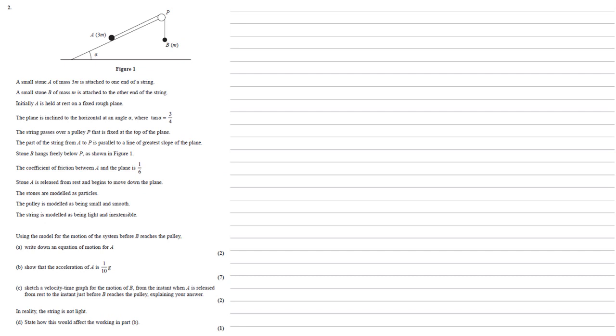The coefficient of friction between A and the plane is a sixth. Stone A is released from rest and begins to move down the plane. The stones are modelled as particles. The pulley is modelled as being small and smooth. The string is modelled as being light and inextensible. Using the model for the motion of the system before B reaches the pulley, we need to write down an equation of motion for A.